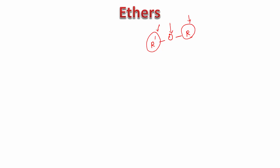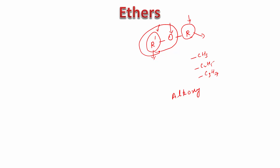How do we name these ethers? We assume that one of the R groups — R or R prime — is simple. When I say simple, it could be methyl, ethyl, or propyl, even isopropyl. These are very simple groups whose names are very typical. If that is the case, then we name one of them as alkoxy. R prime and O together are called alkoxy, and R is the alkane.